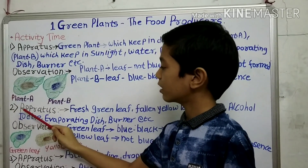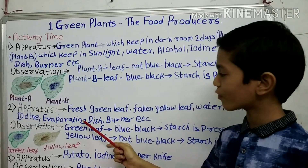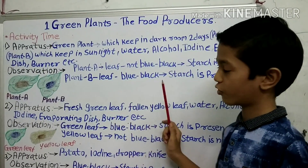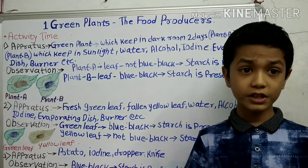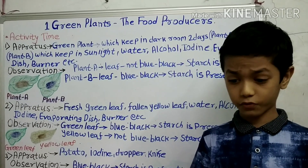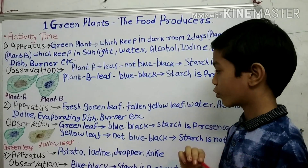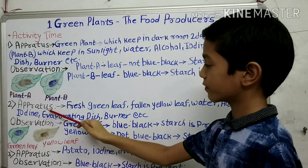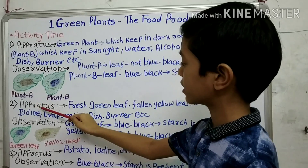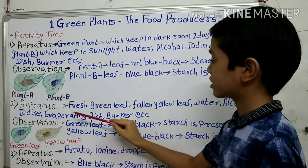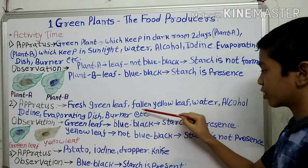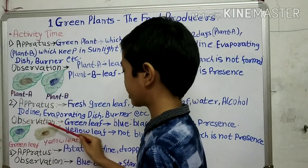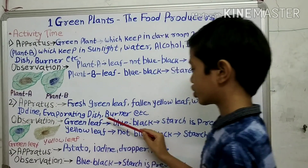Activity number 2. The aim of this activity is: is chlorophyll important for photosynthesis? Yes, chlorophyll is important. The instruments needed are: a fresh green leaf, a fallen yellow leaf, water, alcohol, iodine, an evaporating dish, a burner, etc.